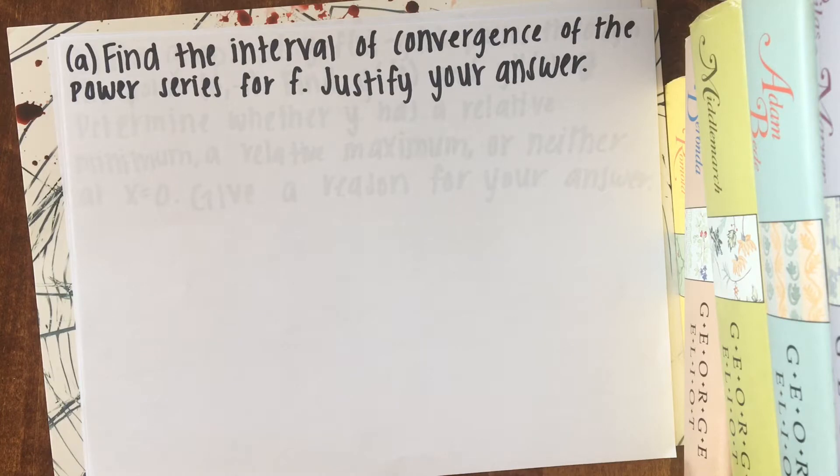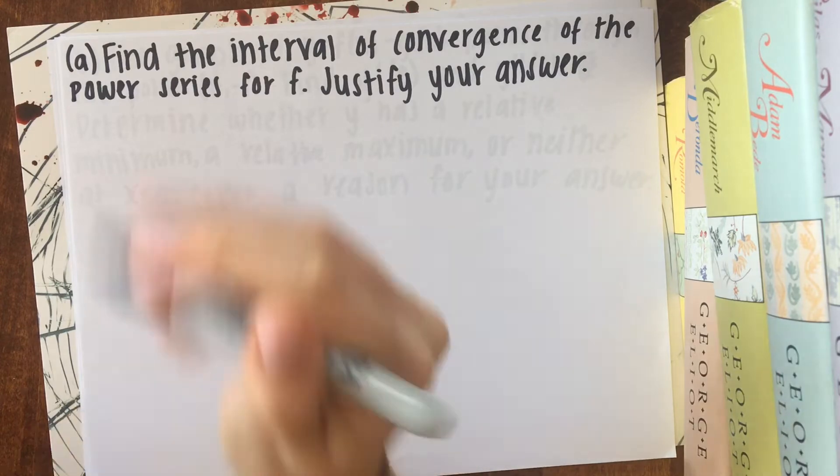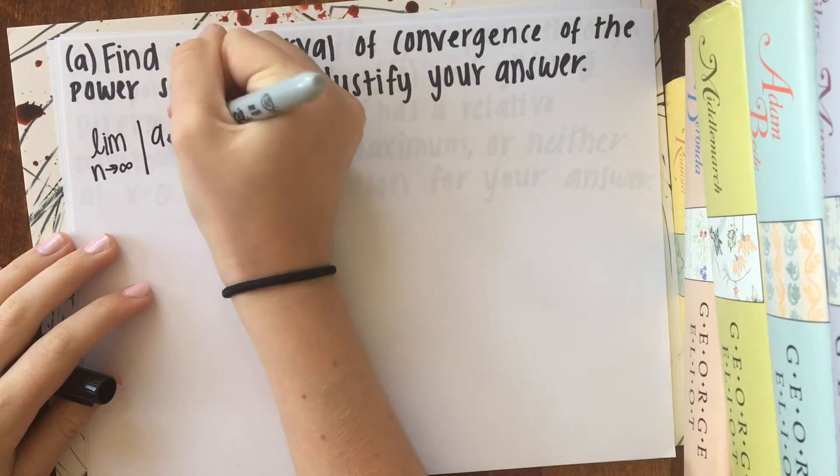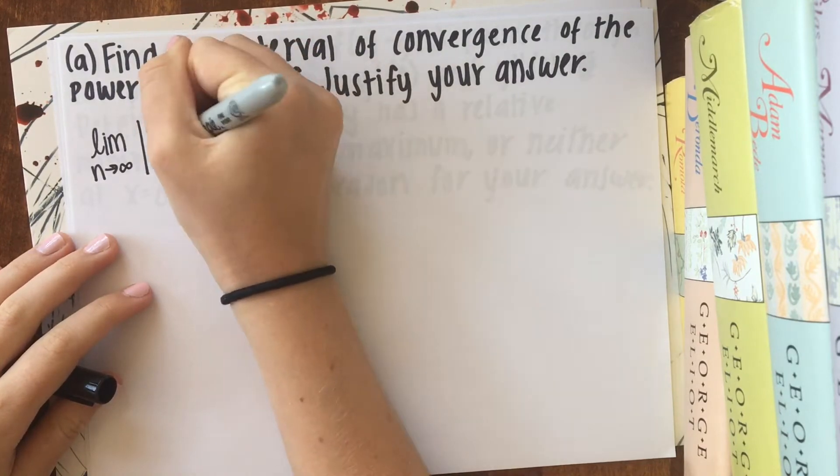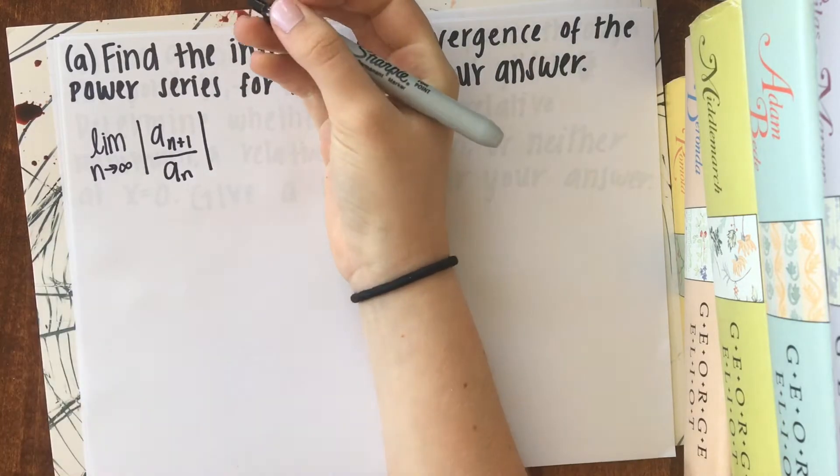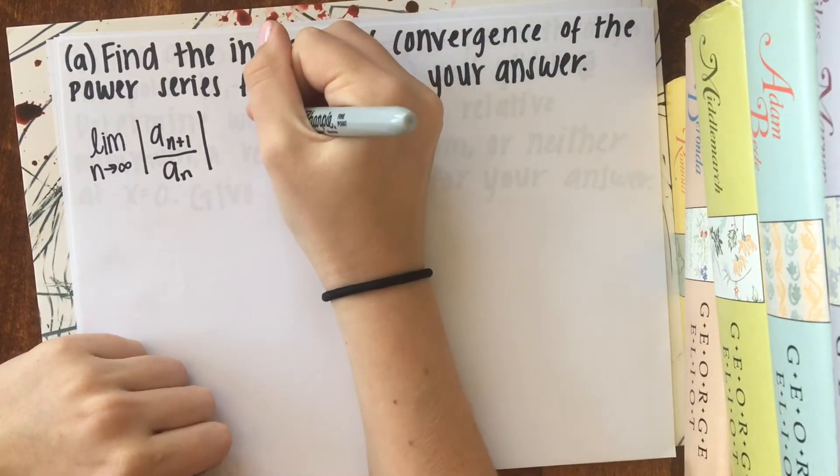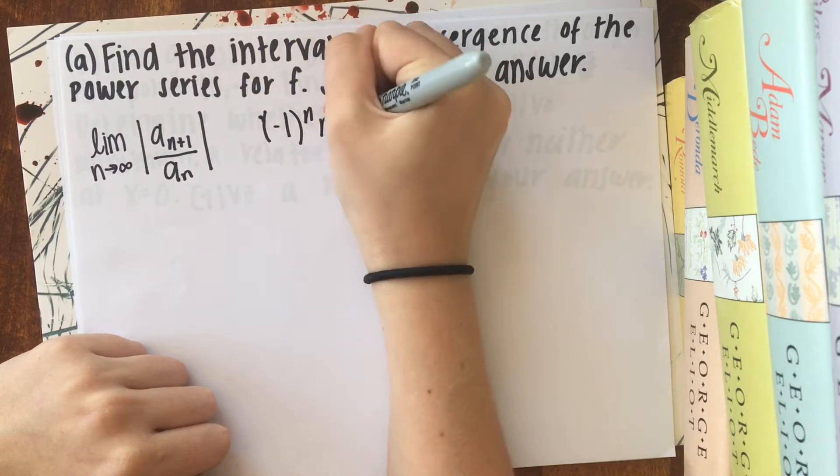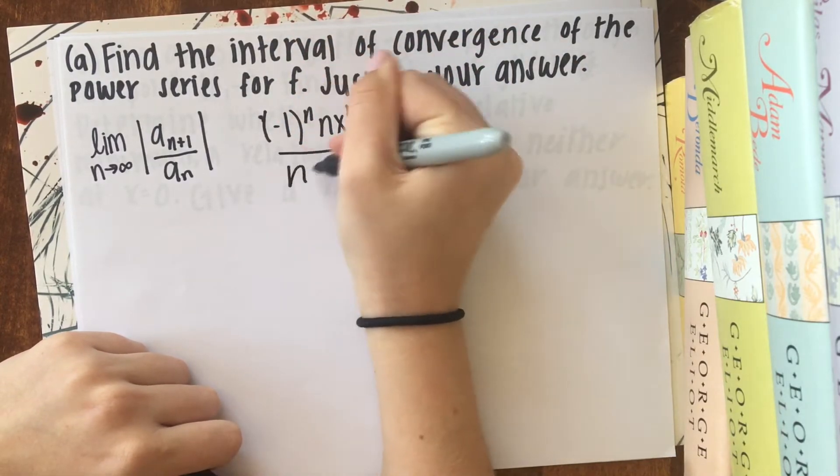And the method we use to do this is the ratio test, which states that if the ratio of the n plus 1th term over the nth term is less than 1, then the series converges. So now we're going to take the limit as n goes to infinity of this nth plus 1th term divided by the nth term. And if you remember earlier from the given information, the nth term is given by that.